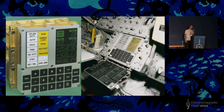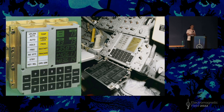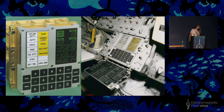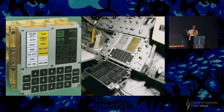This is the DSKY — the main way astronauts operated the computer. It's essentially a glorified numeric keypad in the bottom half. Top left has various alarms the computer would trigger. On the right-hand side, the main display is three five-digit numbers — that's essentially your monitor, the only information the computer could give you. Astronauts wearing spacesuits and gloves had to be able to operate it, so big chunky buttons and a simple interface were essential.